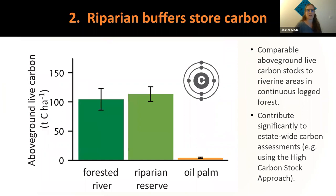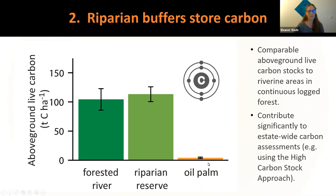On the second question — whether riparian buffers store carbon — it was very clear from the data that riparian reserves are storing as much carbon as forested areas in continuous forest, and definitely a lot more carbon than oil palm areas. Riparian buffers can really contribute significantly to a statewide carbon assessment, and if oil palm companies are using the HCS approach, these riparian buffer areas could really help contribute to their carbon assessments.